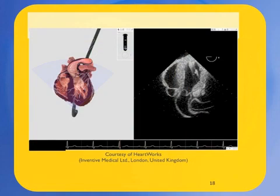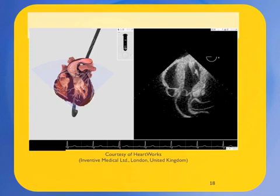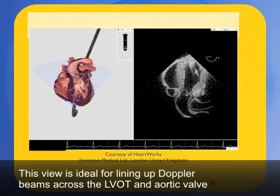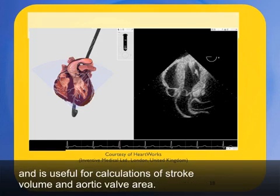The pulse wave through the LVOT is obtained in the deep transgastric or transgastric long axis views. In the deep transgastric view, the probe is advanced into the stomach and antiflexed gently until the apex is seen at the top of the screen closest to the probe, and the LVOT and aortic valve are seen at the bottom of the screen. This represents an inversion of the usual way the heart appears in the mid-esophageal views. This view is ideal for lining up Doppler beams across the LVOT and aortic valve and is useful for calculations of stroke volume and aortic valve area.